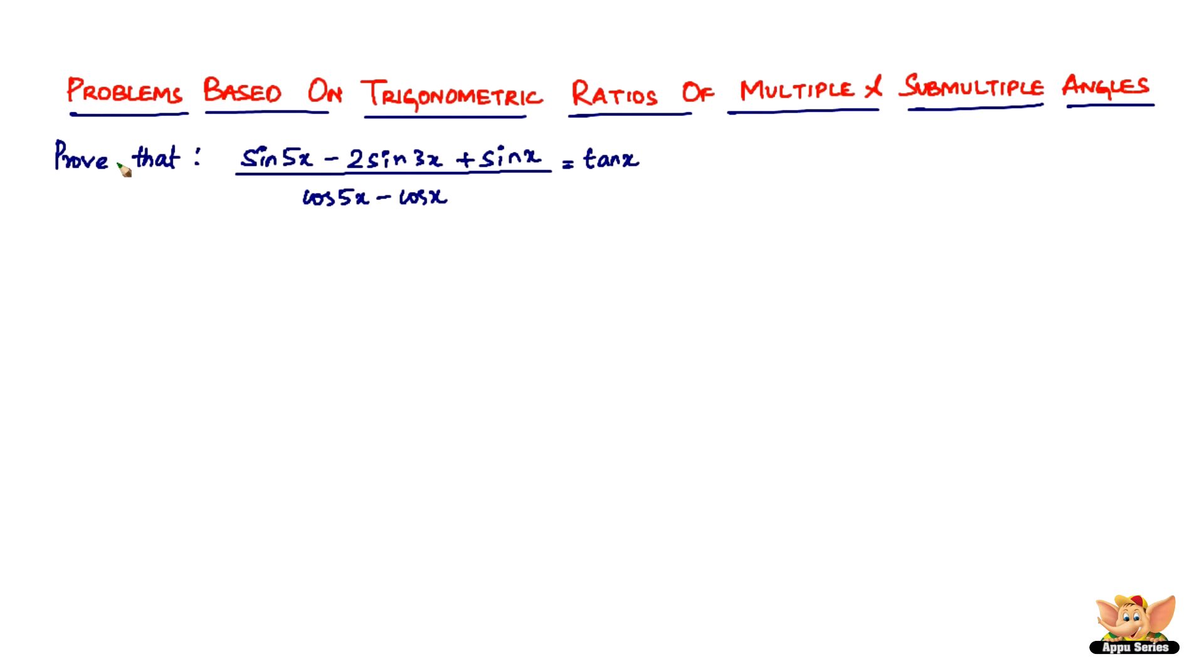Alright, so here we've got a problem which reads like this. It says prove that sine 5x minus 2 sine 3x plus sine x divided by cosine 5x minus cosine x equals tan x. So this is what we have to prove.